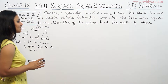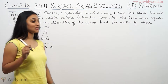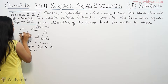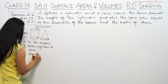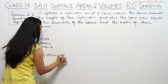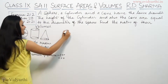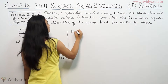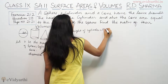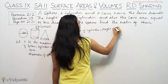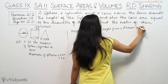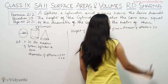The height of the cylinder and also of the cone are equal to the diameter of the sphere. Since the radius is r, the diameter will be 2r. So diameter of sphere is 2r. Therefore, the height of cylinder is equal to the height of cone, which is equal to the diameter of sphere — that means all three equal 2r.